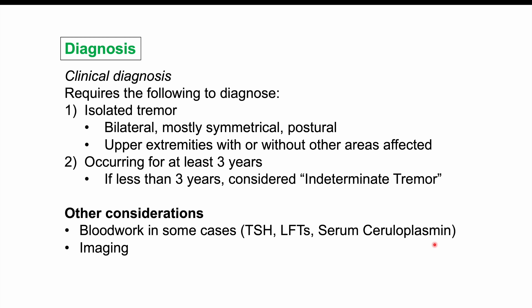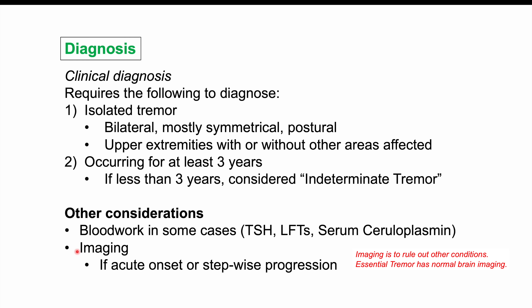Imaging can also be considered in some cases, especially with an acute onset — where very severe tremors appear too quickly and severely all at once — or if there is a stepwise progression where severity increases in a step-by-step fashion rather than the typical slow worsening over time. Acute onset or stepwise progression can indicate other conditions causing the tremor, and MRI or CT scan of the head can be helpful in those cases.